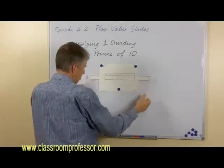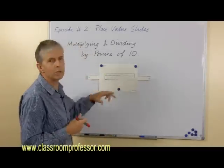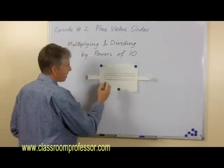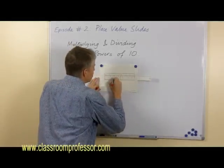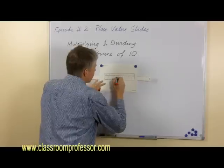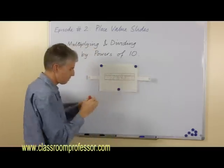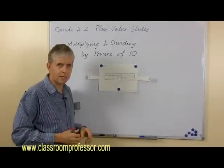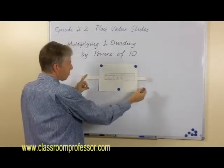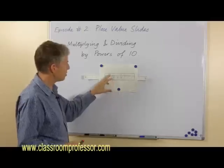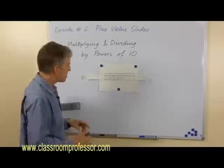If I position the slide and write a number in the windows — let's make it 273.5, using hundreds, tens, ones, and tenths — if we wanted to multiply that by 10, everything has to get bigger. With the place value slide it's a simple matter of sliding that one place to the left. The two moves into the thousands column, the seven into the hundreds, and so on. And we have the number 2,735.